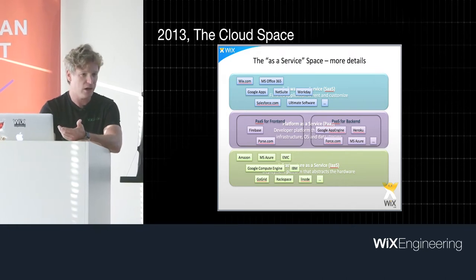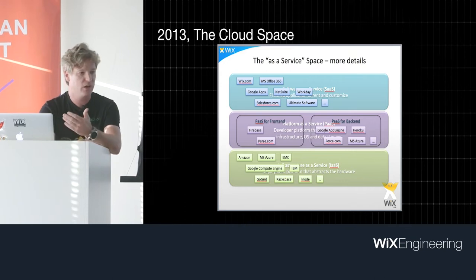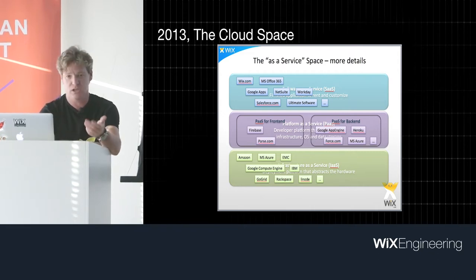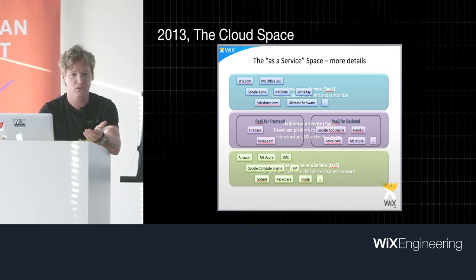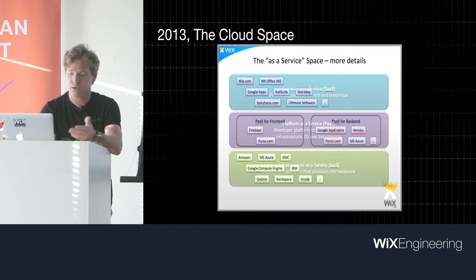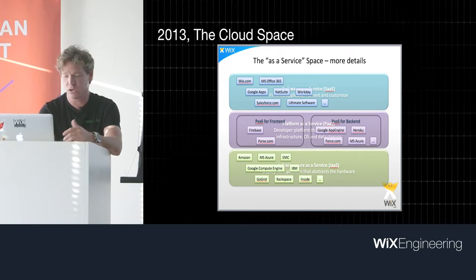This is a slide I created in 2013, showing the cloud space. At the time, people used to talk about clouds in terms of infrastructure — which is about instances — platforms, and SaaS products. SaaS products are like Salesforce and Wix, provided 100% online. Platforms are about: I just drop in my code and it runs. And infrastructure — instances, now containers as well.